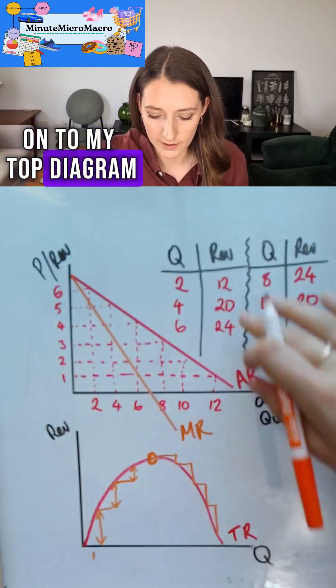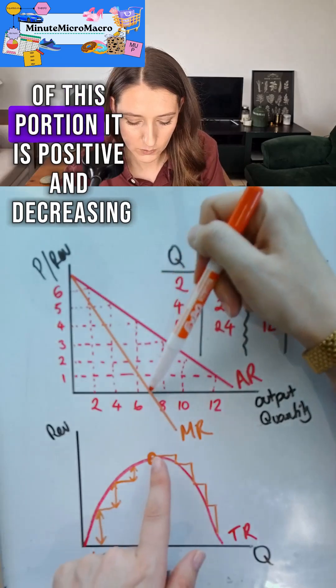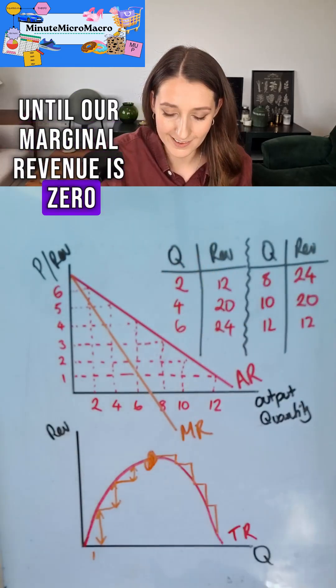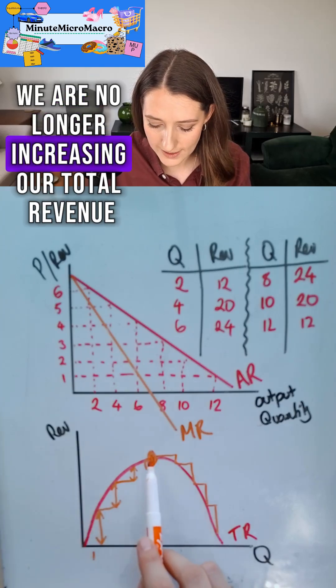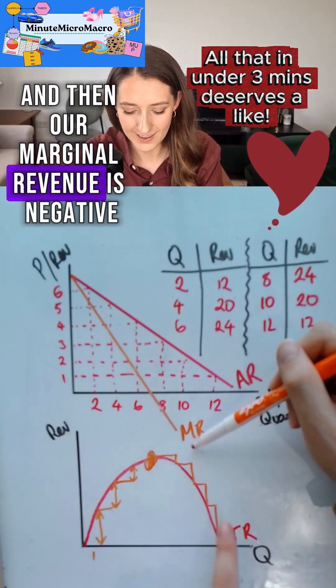Onto my top diagram it will have twice the gradient of my average revenue. For this portion it is positive and decreasing until our marginal revenue is zero. We are no longer increasing our total revenue by decreasing the price and then our marginal revenue is negative.